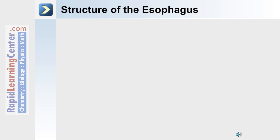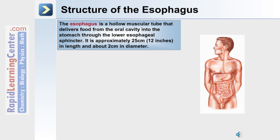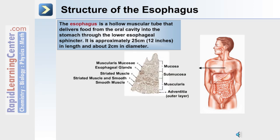After the oral cavity is the esophagus within the digestive system. The esophagus is a hollow muscular tube that delivers food from the oral cavity into the stomach while passing through the lower esophageal sphincter. It is approximately 25 centimeters or 12 inches in length and about 2 centimeters in diameter. The histology of the esophagus includes the mucosa, submucosa, and muscularis, as well as the adventitia or outer layer. Within the mucosa is the muscularis mucosa; within the submucosa are the esophageal glands; and striated muscle and smooth muscle are within the muscularis layer.